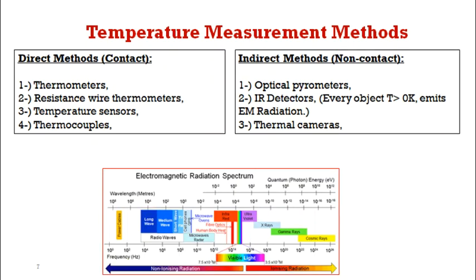Basic thermometers and thermocouples are one of the examples for direct methods. Optical pyrometers, infrared detectors and thermal cameras are the examples for indirect methods.